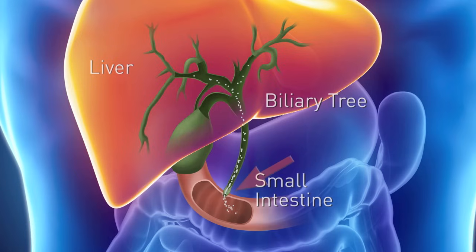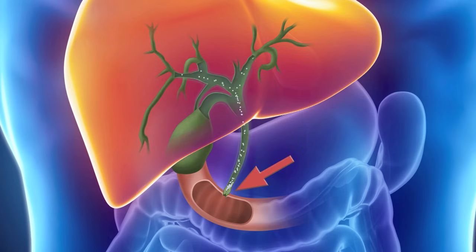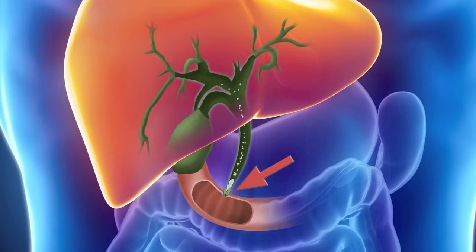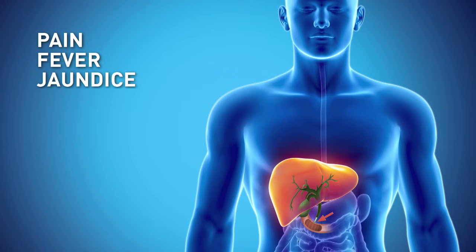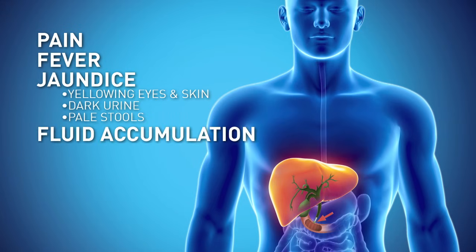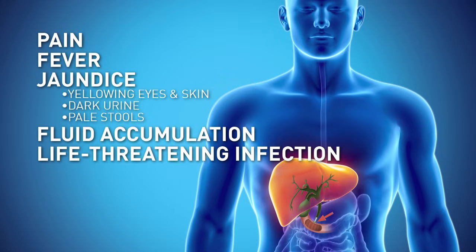When your bile ducts have blockages from cancer, the bile salts begin to build up in your liver and blood. You may experience pain and fever, and symptoms of jaundice — yellowing of the eyes and skin, dark urine and pale stools. Fluids may accumulate in your abdomen. This is a very serious condition, and if the blockage is not corrected, it can lead to a life-threatening infection or even liver failure.